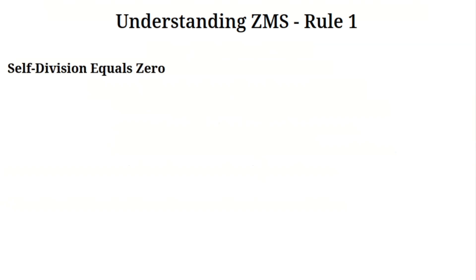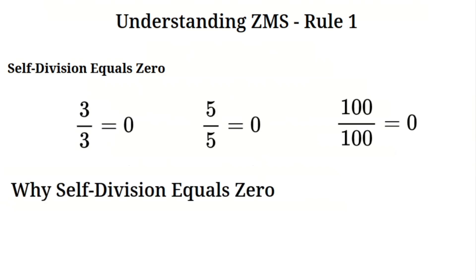But in zero modular system, we define it differently. Instead, we say that dividing a number by itself gives zero. For example, three divided by three is zero. Five divided by five is zero. One hundred divided by one hundred is zero. Why? Because when you divide a number by itself, there is nothing left over. So the remainder is zero.